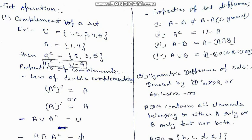Now we will discuss set operations. The first operation is complement of a set. Complement of a set means from the universal set elements, whichever set we take, we need to find the complement.